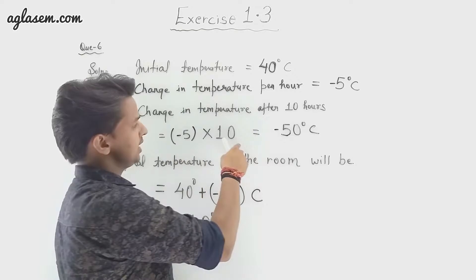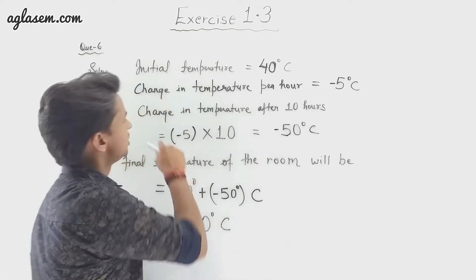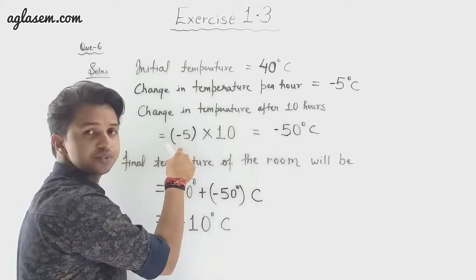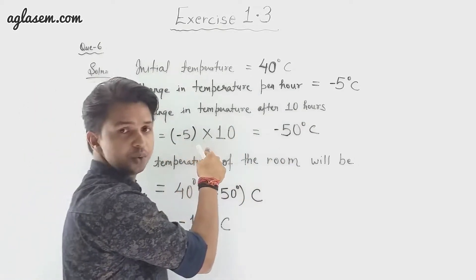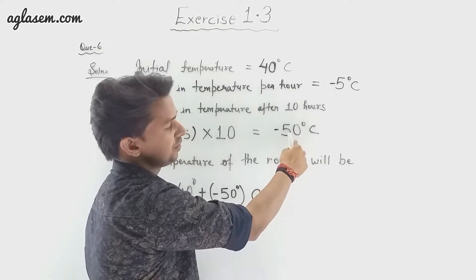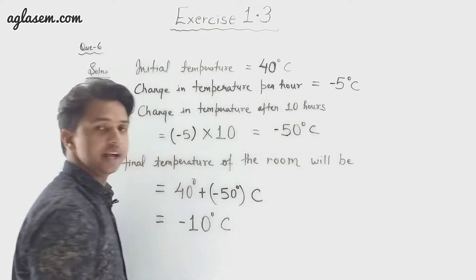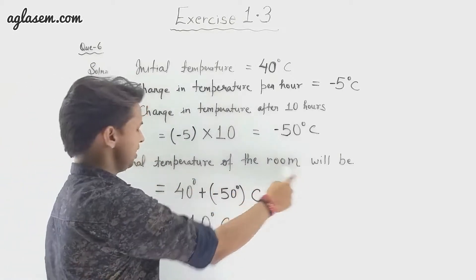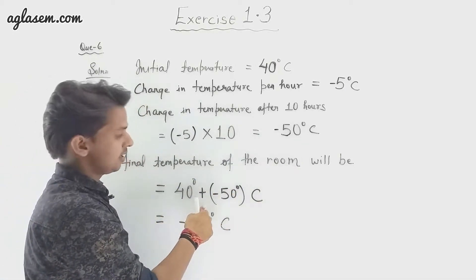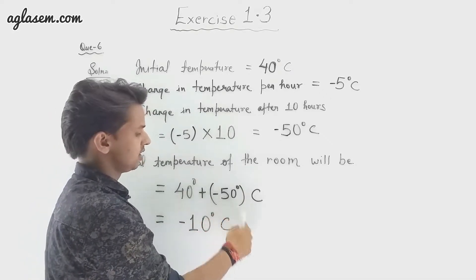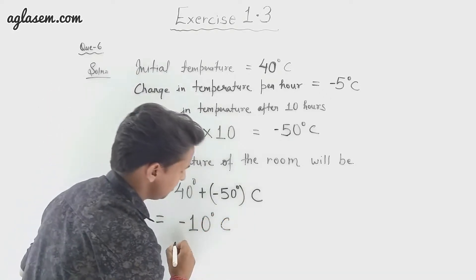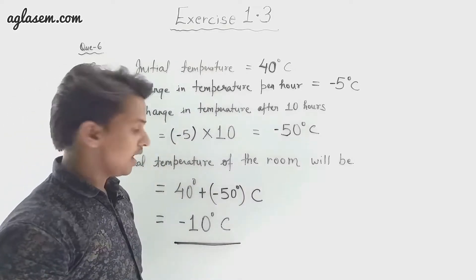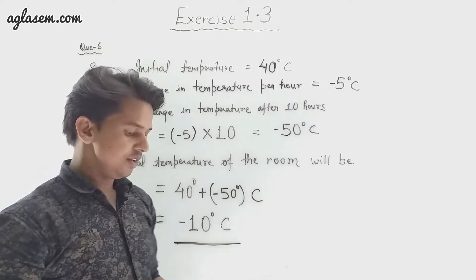We need to find the temperature after 10 hours. Change in temperature after 10 hours is minus 5 degrees Celsius multiplied by 10, which equals minus 50 degrees Celsius. So the final room temperature is 40 plus minus 50, which gives minus 10 degrees Celsius. The room temperature after 10 hours will be minus 10 degrees Celsius.